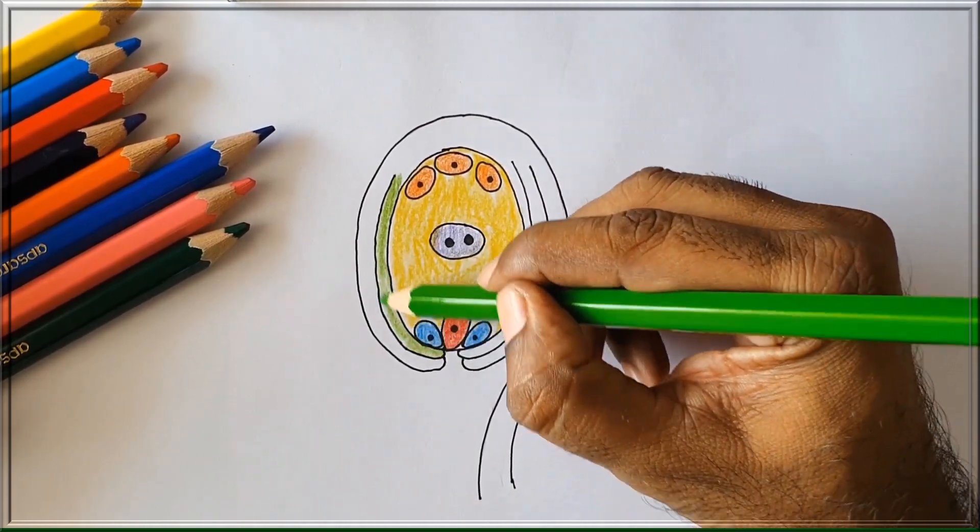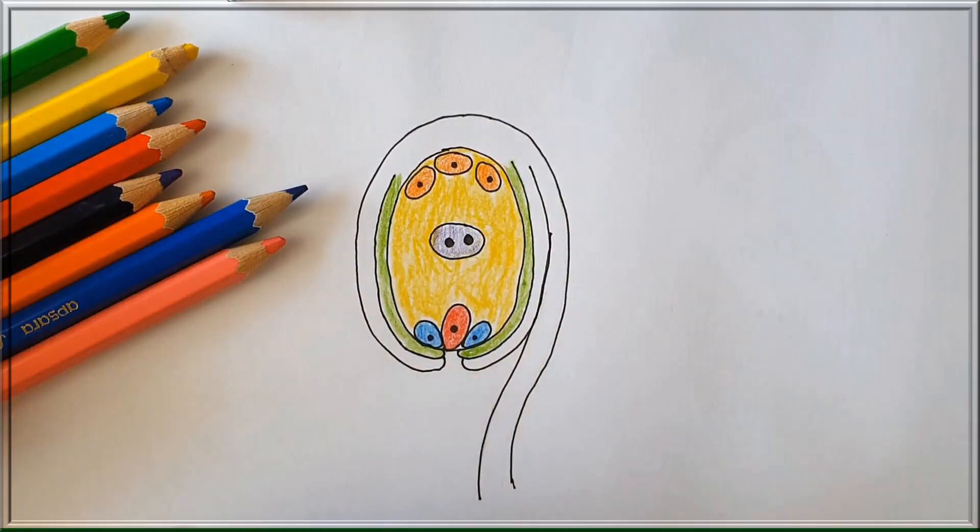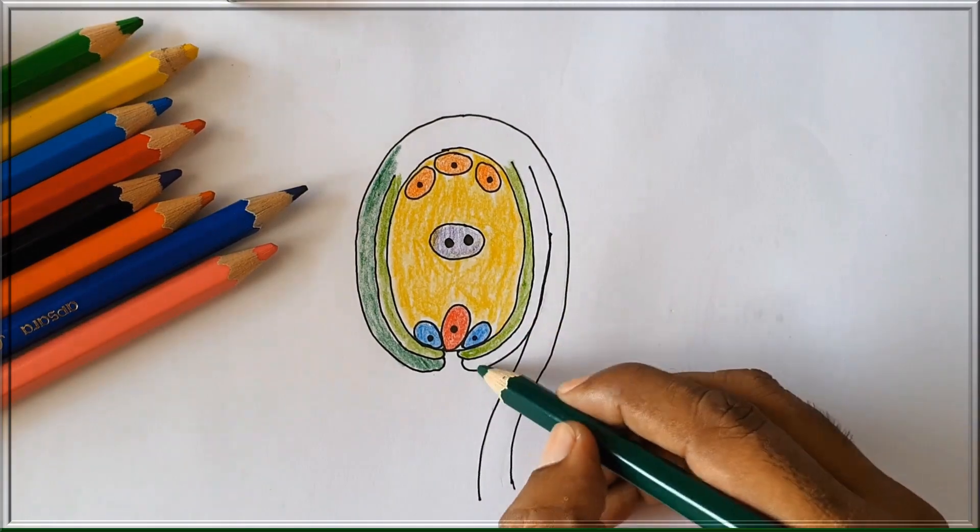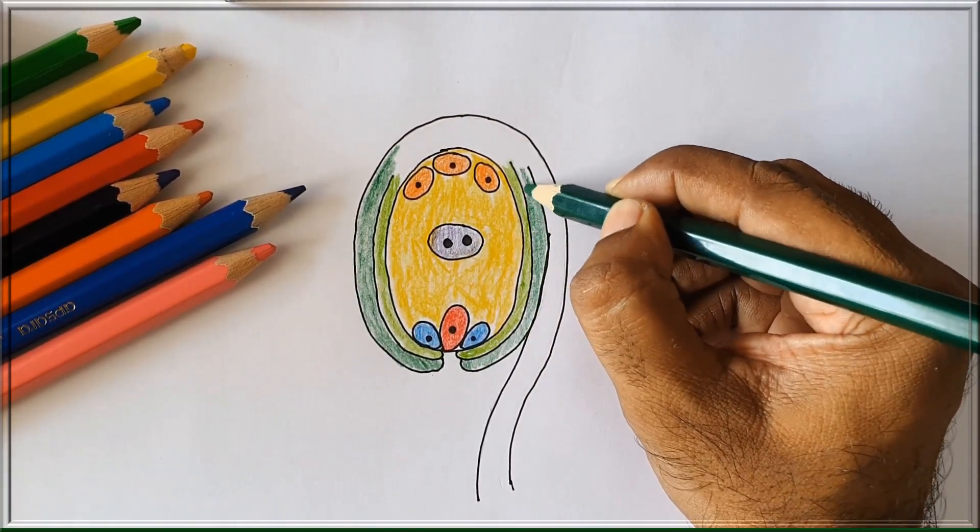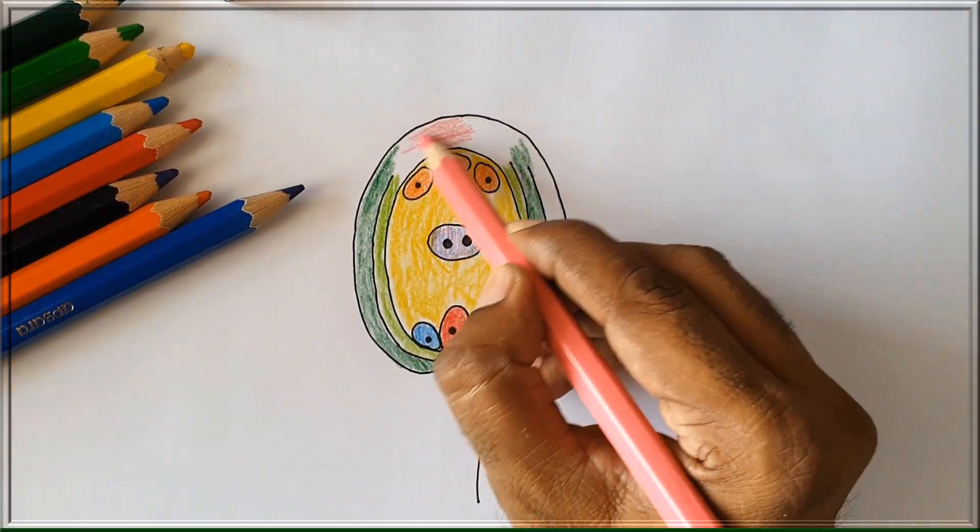Light green color to inner integument, dark green color to outer integument, and pink color to chalaza.